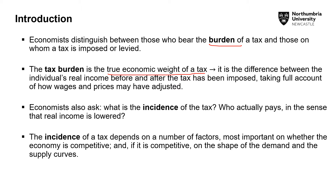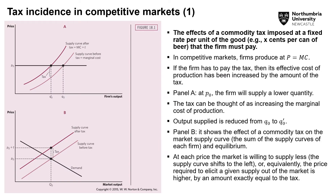The incidence of taxes depends on a number of factors — most importantly, on whether the economy is competitive, and if competitive, on the shape of the demand and supply curves. Therefore, we return to this discussion of market structure. Tax incidence refers to how the division of taxes falls on both the employee and the employer, or alternatively the firm and the consumer. That division is different from just looking at a consumer's income, because the level of tax is also impacted by how a firm is taxed.